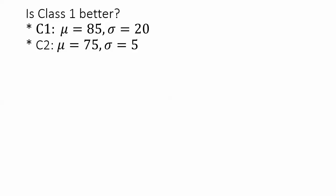One of the questions we can try to answer with the idea of variability is the performance of one class compared to another on maybe a test. On average, now that we're dealing with population values here, our population mean for the entire class is 85 with a standard deviation of 20. And class 2 has a mean of 75 with a standard deviation of 5. So, which class is better?